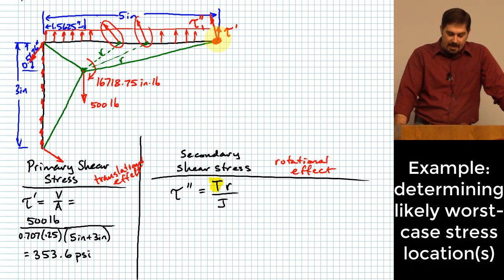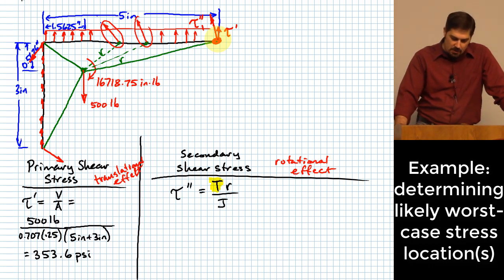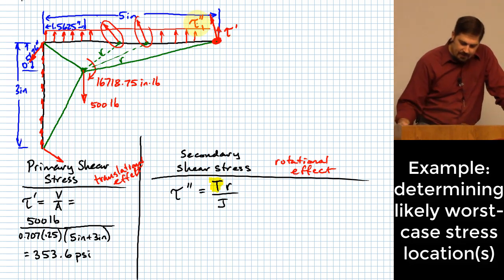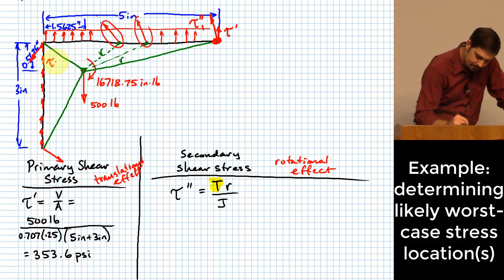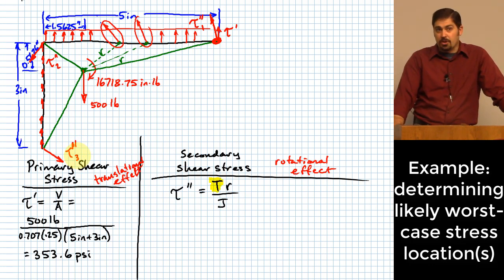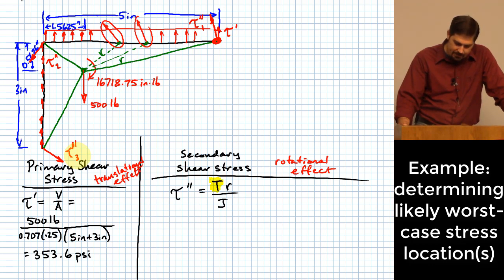By going through this logic, I saved having to check other locations that could be the critical locations. This is the kind of discipline that makes you effective — being able to see that from the beginning. So let's look at that top right location. I'll label the others tau double-prime two and tau double-prime three, but I've basically said I don't need to look at those because they are not going to be my worst case.